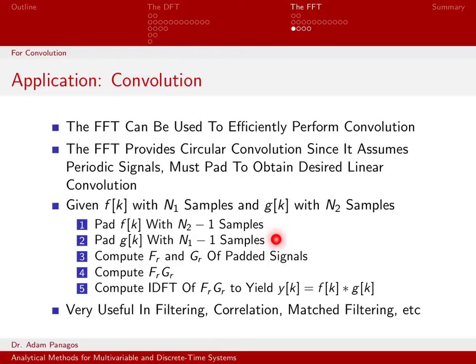Now that we have signals that are basically the same length, we are going to go ahead and compute the DFT of these signals. We're going to compute Fr and Gr. So we can do that using just the FFT. So now we're going to be in the frequency domain, and each one of these signals in the frequency domain is going to have the exact same length.